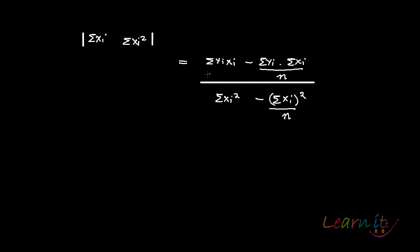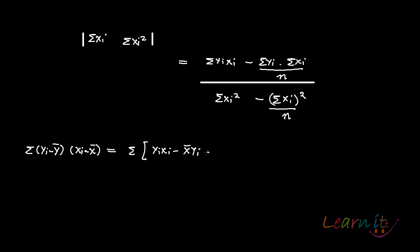Now let us look at the numerator and then look at this expression: summation of (yi minus y bar) into (xi minus x bar). Just open this up and what you get is yi·xi minus x bar·yi minus y bar·xi plus x bar·y bar.